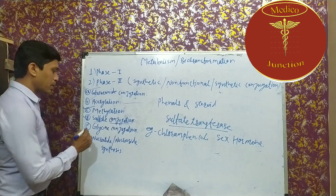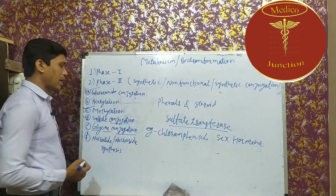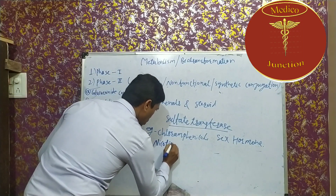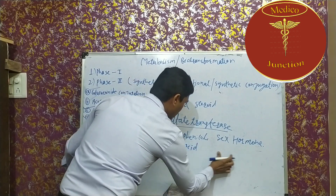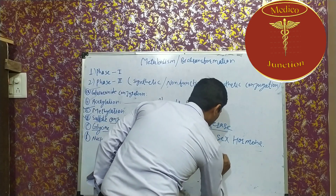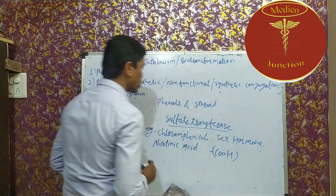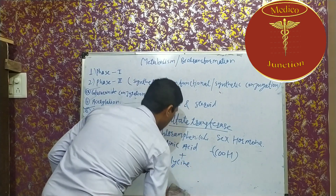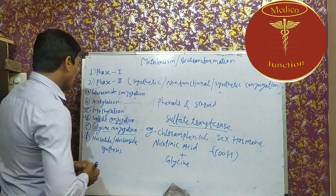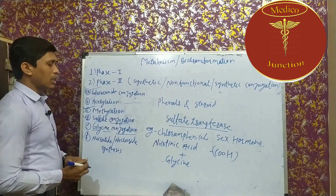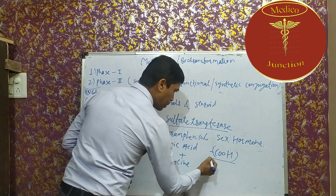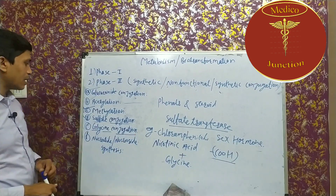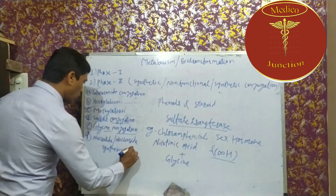The next reaction is glycine conjugation. An example is nicotinic acid. In glycine conjugation, the condition is that the drug must have a carboxylic acid group. Only such drugs undergo glycine conjugation, meaning glycine is added to the drug molecule. We call this process glycine conjugation.